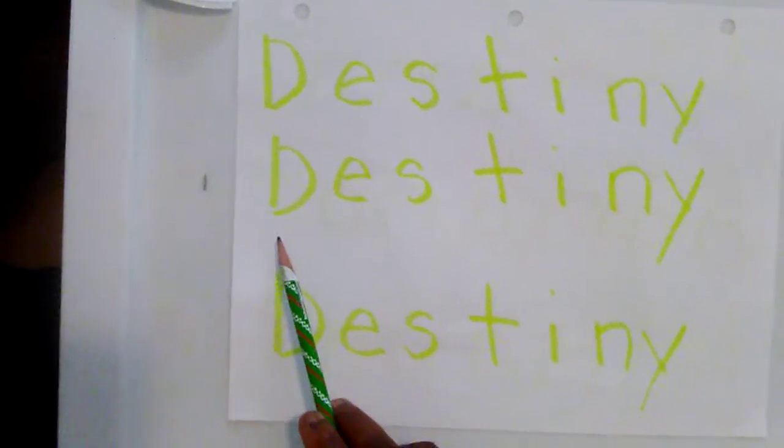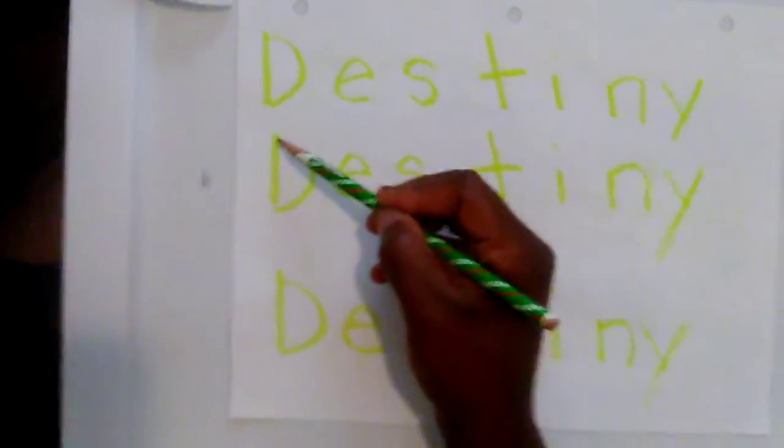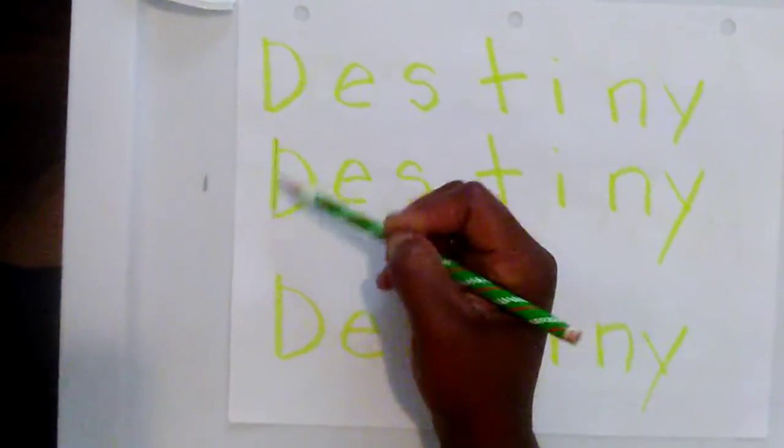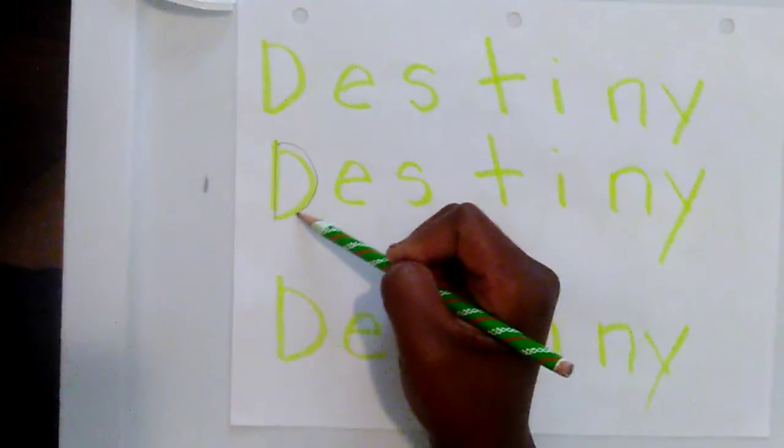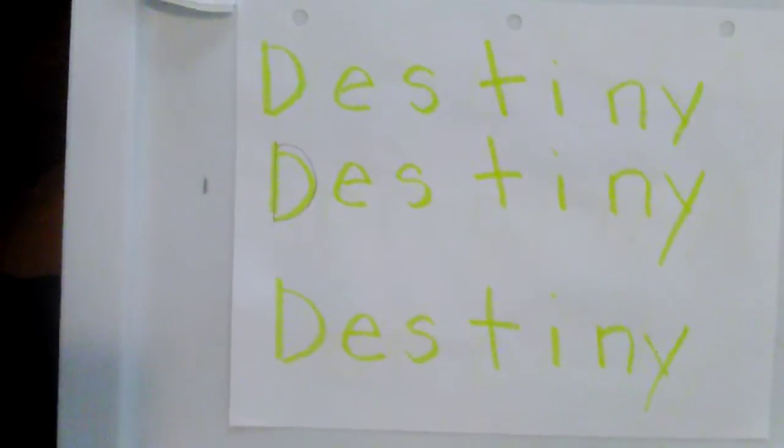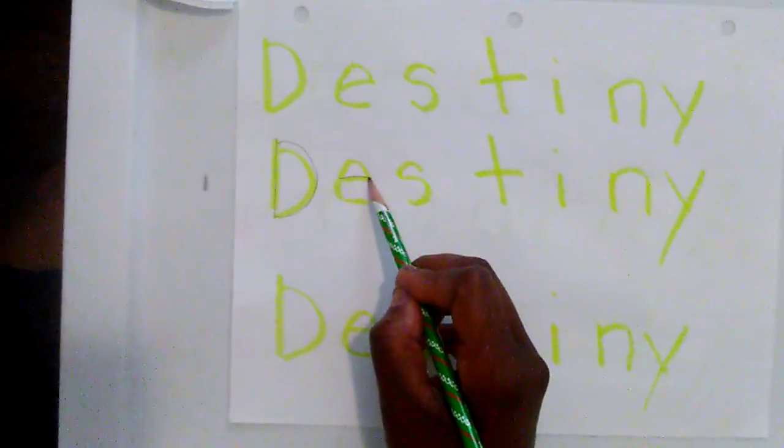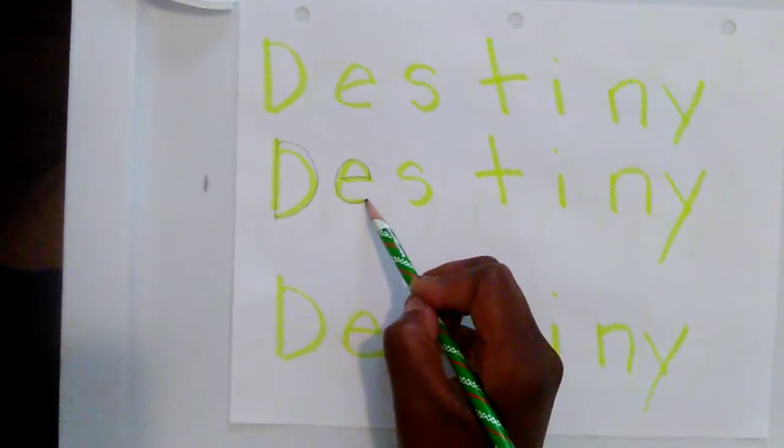First letter in your name is D. Start at the top, down, come around, stop. E, across, come around, stop.